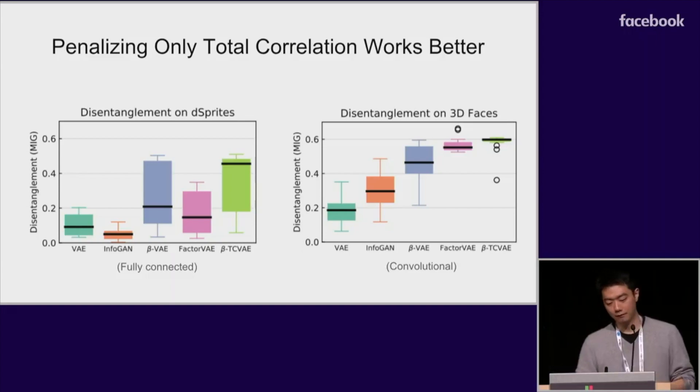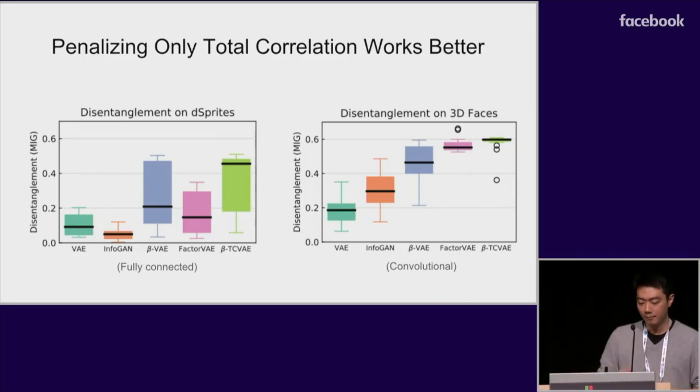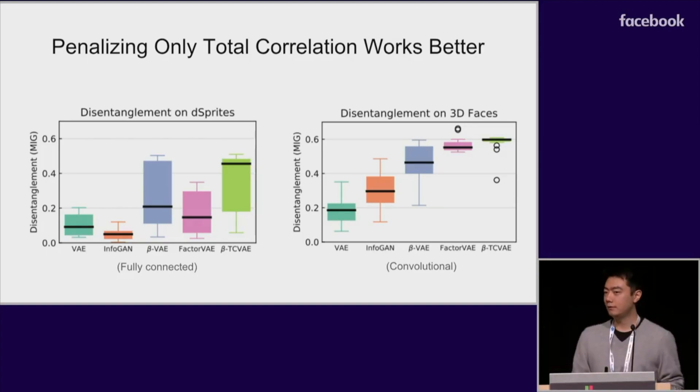We begin by verifying our previous claim that penalizing only the total correlation should perform better than the beta VAE, which penalizes all terms in our decomposition. The black bars in these box plots show the median disentanglement score over 20 random initializations. Note that InfoGAN and factor VAE both use discriminator networks to approximate divergences, which can lead to some unstable behavior, especially when using fully connected architectures. Also of note is that the TCVAE approximates the same objective as factor VAE, but we were able to achieve similar or better scores compared to a well-tuned factor VAE. In general, TCVAE seems to be more stable than previous algorithms, which helps it achieve higher disentanglement scores more reliably under our metric.